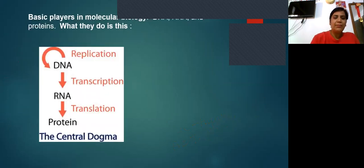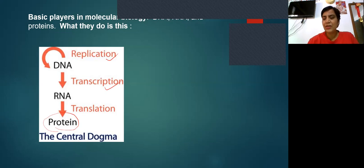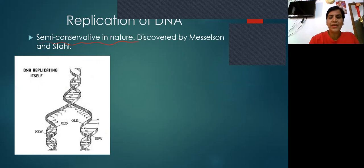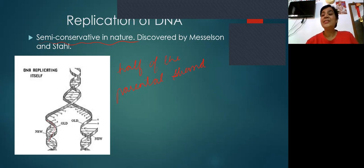The central dogma describes the flow of information: DNA is converted to DNA by replication, DNA is converted to RNA by transcription, and RNA is converted into proteins by translation. Today in this video, we are going to take up DNA replication. Since DNA is double-stranded, the replication is semi-conservative in nature — meaning half of the parental strand will be conserved in successive generations.